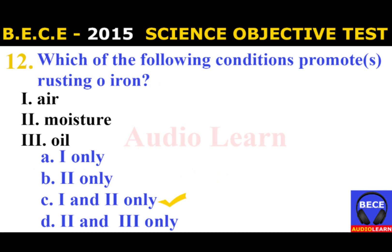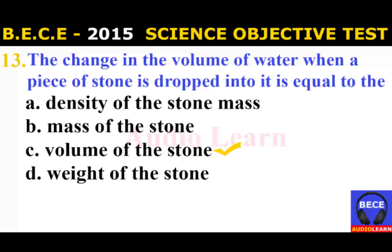Number 12: Which of the following conditions promotes rusting of iron? I. Air, II. Moisture, III. Oil. Possible answers: A. I only, B. II only, C. I and II only, D. I, II and III only. The answer is C. I and II only. Air and moisture are the conditions that promote rusting of iron.